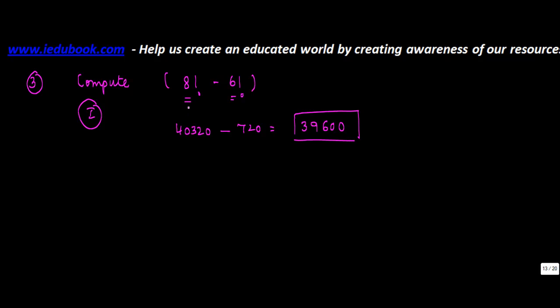So what you did was you computed the value of factorial 8, you computed the value of factorial 6, and subtracted these two. The second way in which you can do this is that you know that